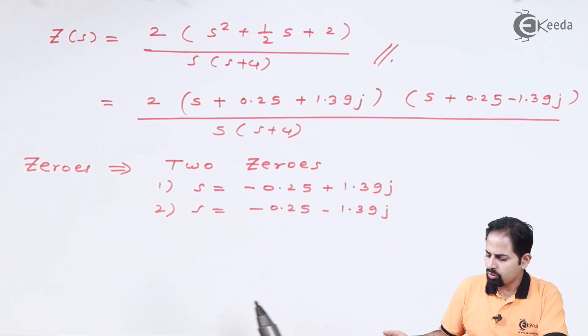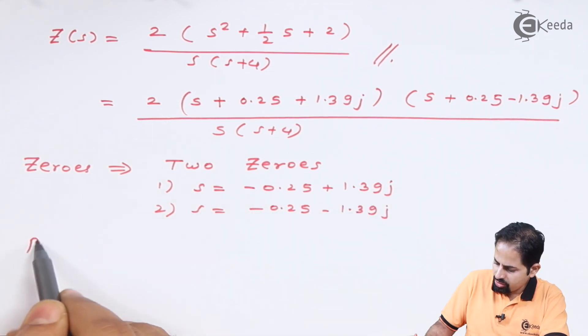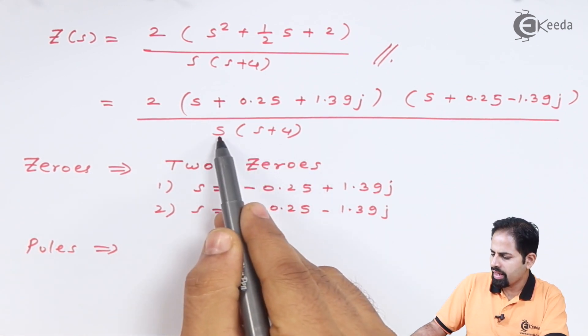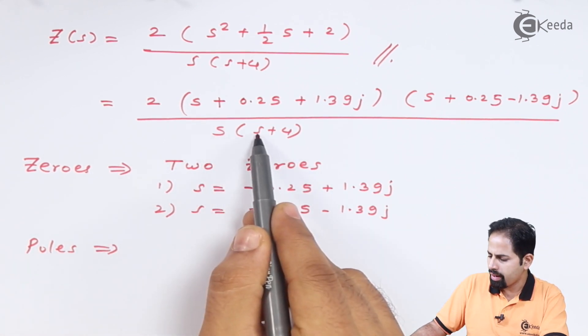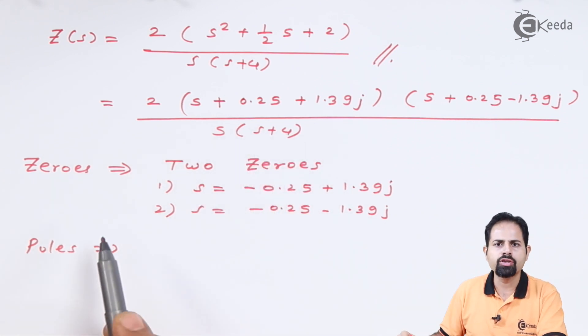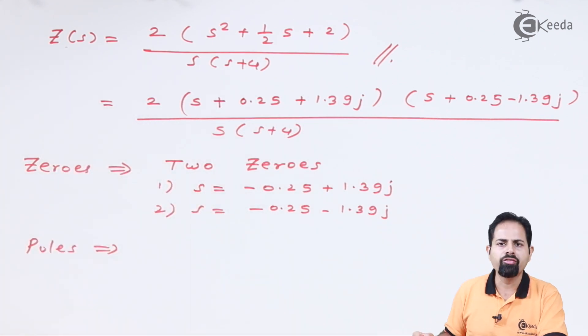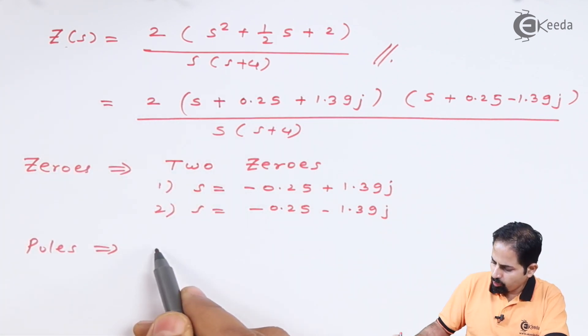These are the two zeros. Now about poles - whenever s is zero or s is -4, the denominator will become zero, and the function will become infinity. So there are two poles: first one is s = 0.